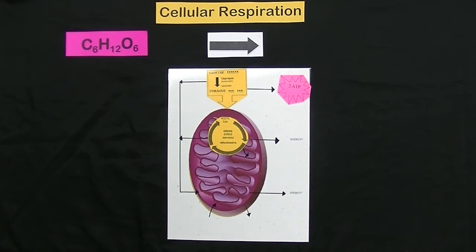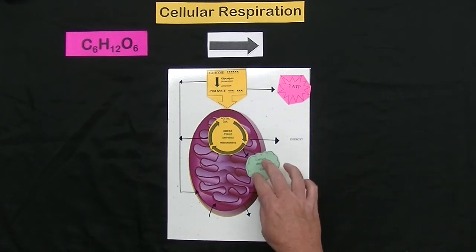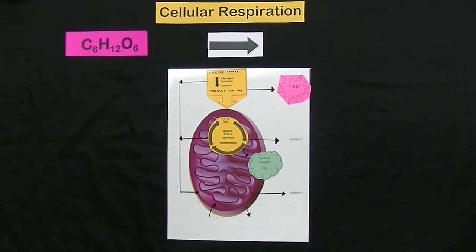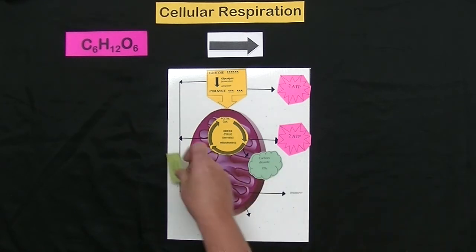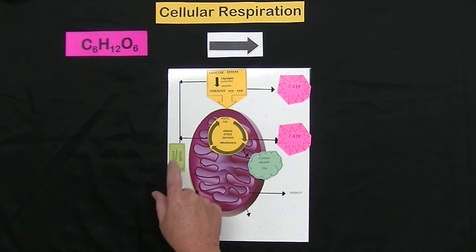Pyruvate then enters something called Krebs cycle. Krebs cycle converts the pyruvate into acetyl-CoA. It enters the cycle where carbon dioxide is one of the products. Two ATPs are produced as a net product and electrons are used from both of those reactions to power energy.